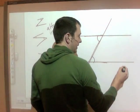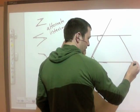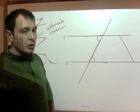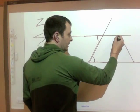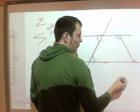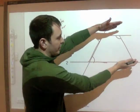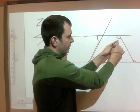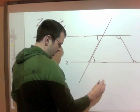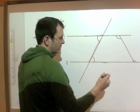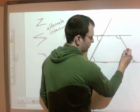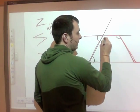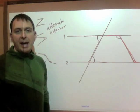If I had another transversal that looked like this, these would also be alternate interior. They're interior because they're inside, and alternate because they're on opposite sides of the transversal. This is the one that looks like an obtuse Z — not what you typically think of as a Z.